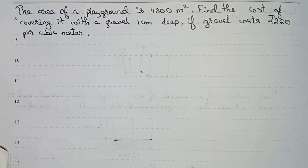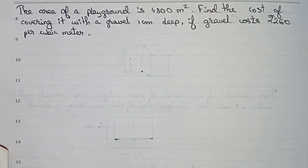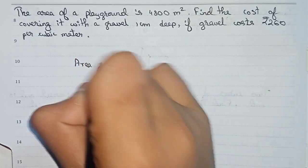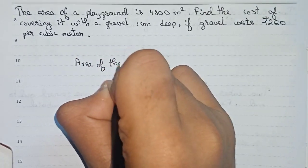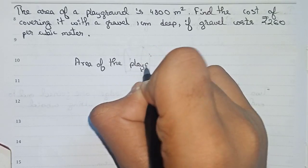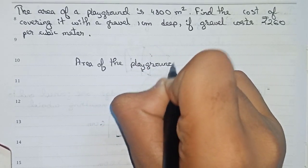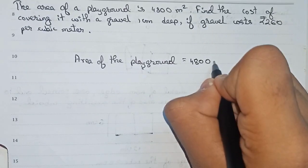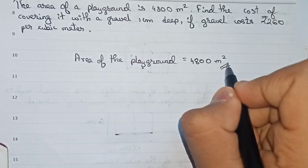So this is our question. Let's solve this. At first, it is mentioned that the area of the playground is 4800 square meters. So this is the area.